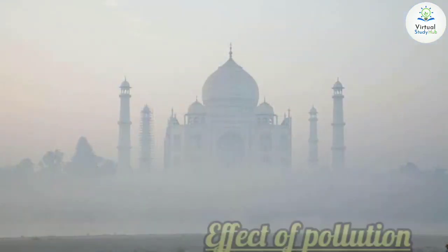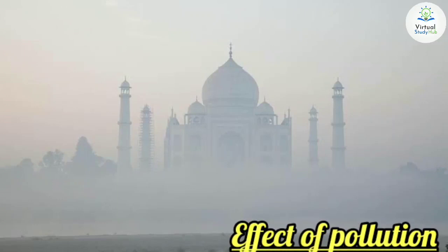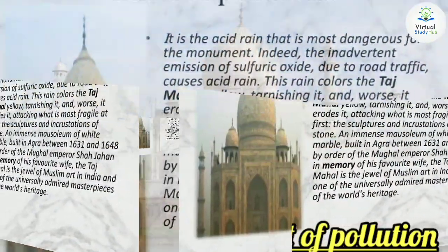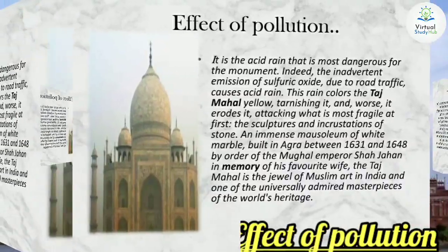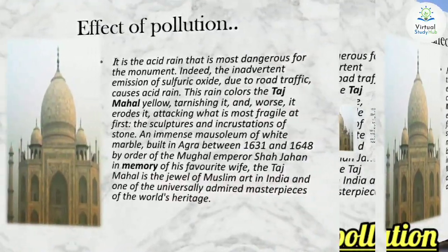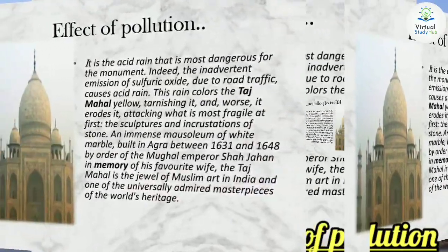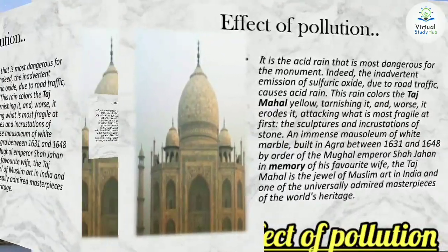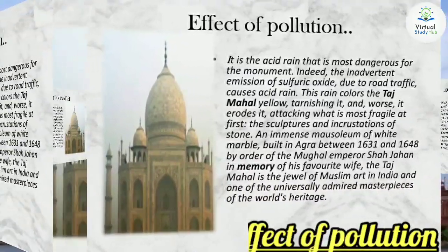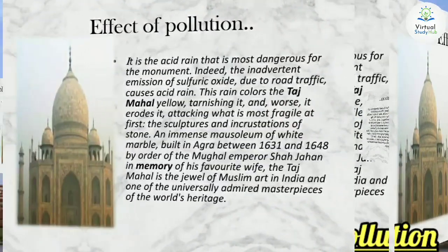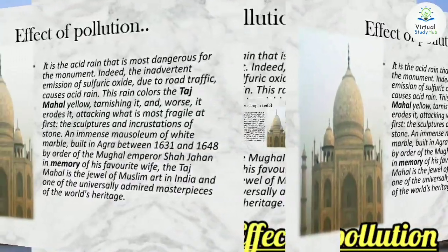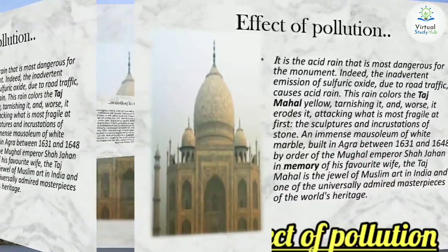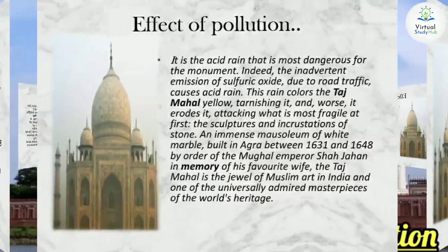The effect of pollution has a great impact on this spectacular monument. In the picture you can see how the beautiful white color is turning yellowish-brown. It is acid rain that is most dangerous for this monument. The uncontrolled emission of sulfur oxide due to road traffic causes acid rain. This rain colors the Taj Mahal yellowish, tarnishing it, and worse, it erodes it, attacking what is most fragile first — the sculptures and crevices of the stone. It is our duty as Indians to protect this universally admired art that is a pride for India.